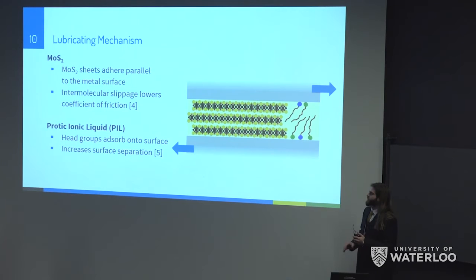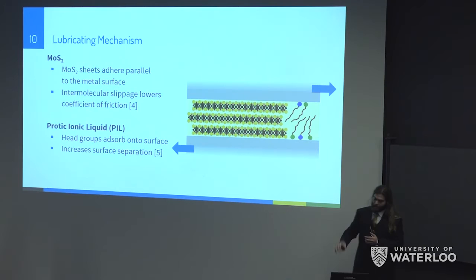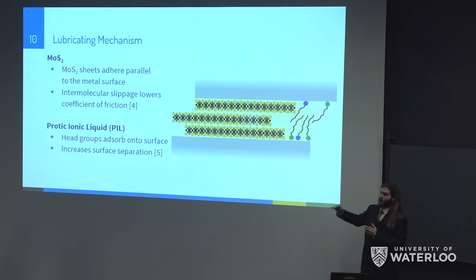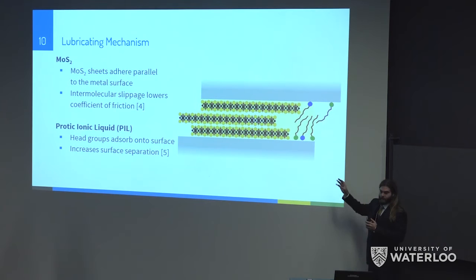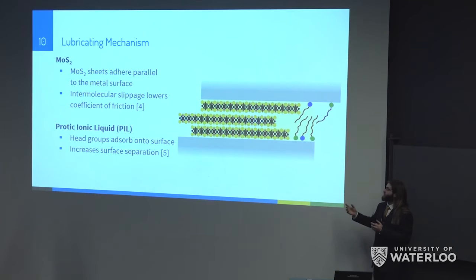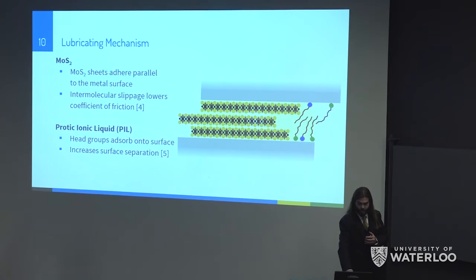For the lubrication mechanism, the MoS₂ particles' sheet-like structures adhere parallel to the metal surfaces. When the metal surfaces slide, the intermolecular forces holding the MoS₂ sheets together are easily sheared, so wear occurs on the sheets instead of the metal surfaces. For the PIL, its heads bind to the metal surface and tails stick outward, increasing surface separation between the two metal sheets, preventing them from wearing against each other and lowering the coefficient of friction.